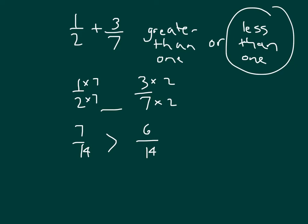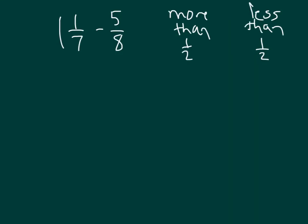We couldn't think of money here, because we're not really sure what three-sevenths of a dollar is, even though we're sure of what one-half of a dollar is. Here we have another problem: one-and-one-seventh minus five-eighths — is this more than a half or less than a half? Let's go ahead and do our work. Let's make one-and-one-seventh into an improper fraction, so we have eight-sevenths minus five-eighths.